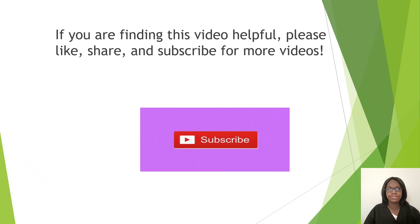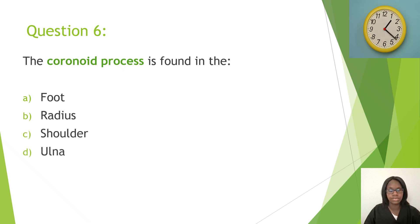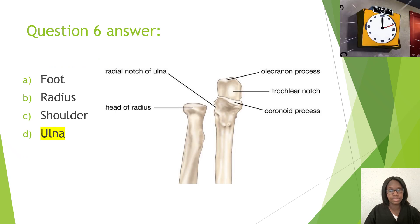Question six: The coronoid process is found in the — A, foot; B, radius; C, shoulder; D, ulna. The correct answer is D, ulna. Make sure you know the difference between coronoid process and coracoid — the coracoid is found in the shoulder; the coronoid process is found in the ulna.